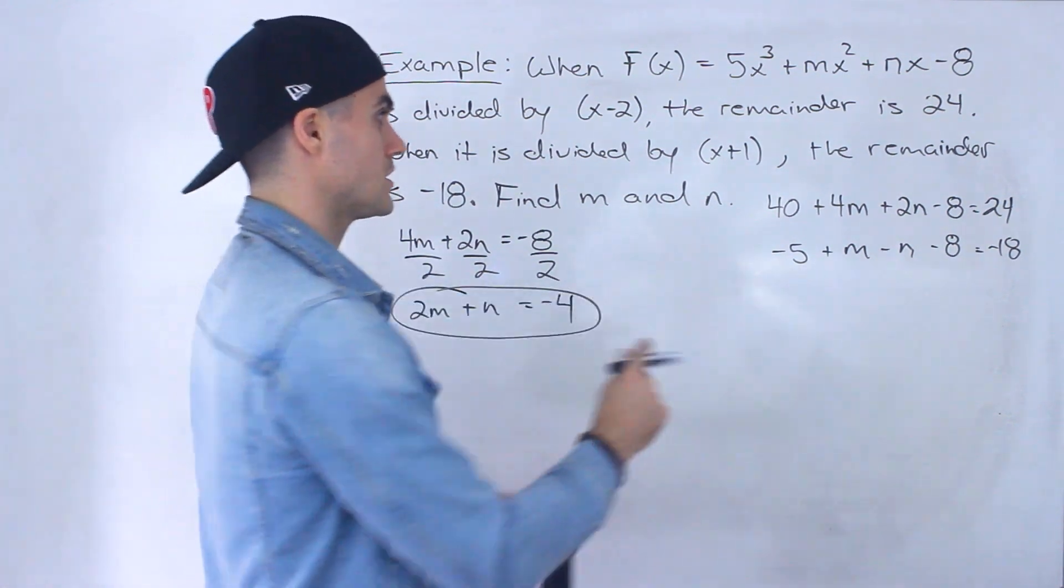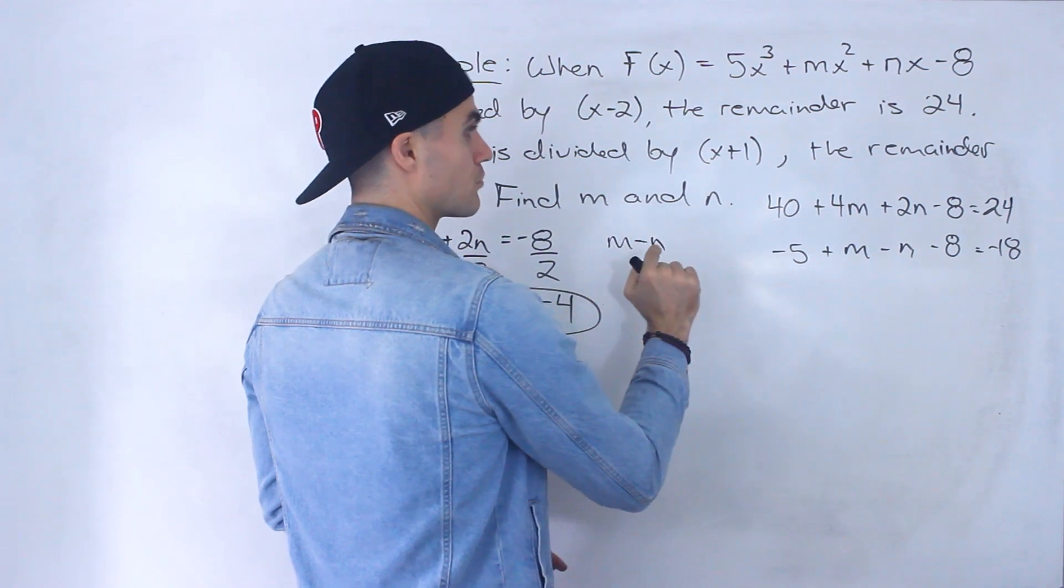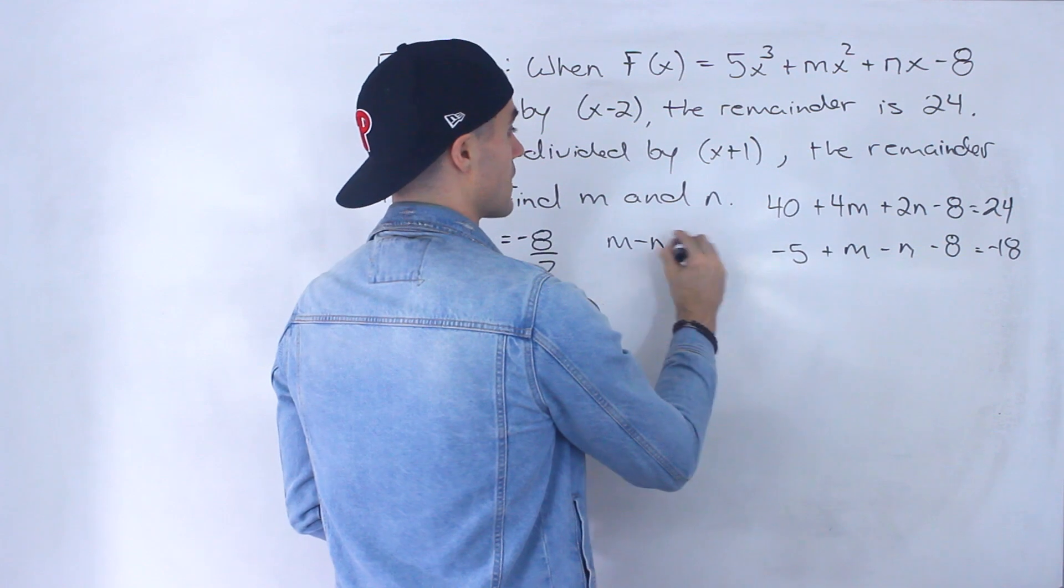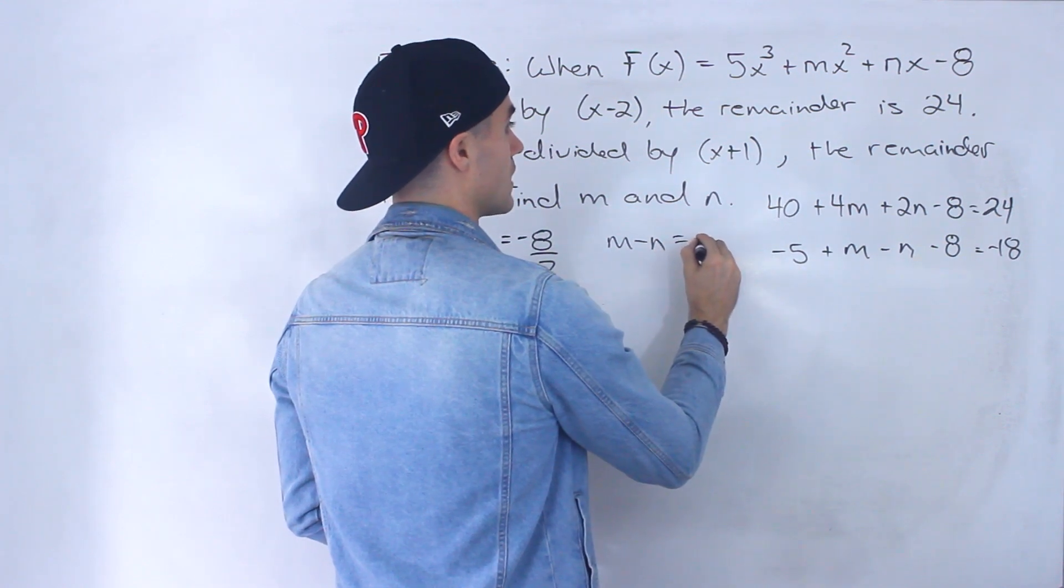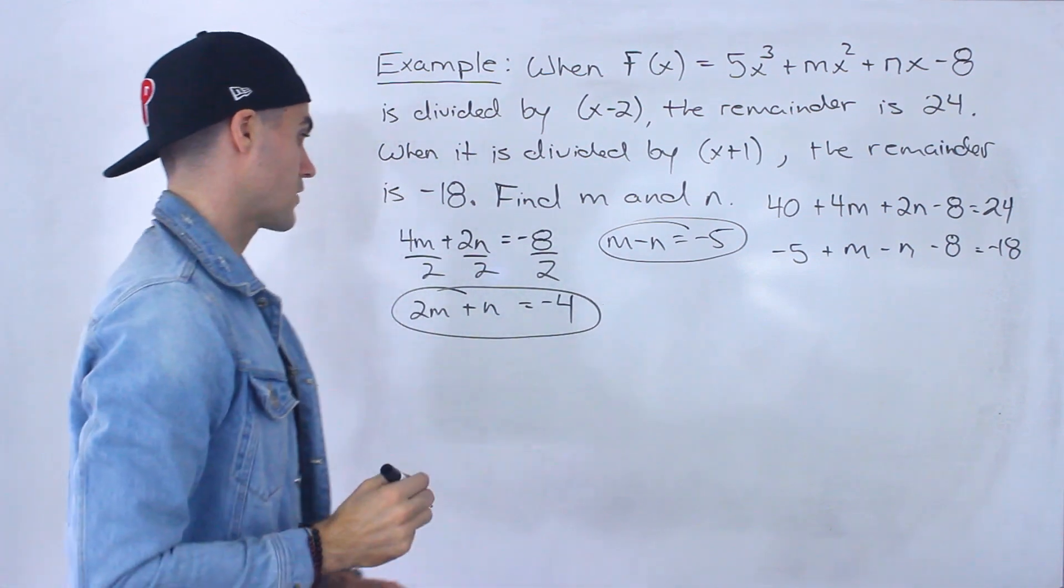Now this second equation, I'm going to keep the m and the n on the left side. Bring the negative 8 over. Negative 18 plus 8 is negative 10 plus 5 gives us negative 5. So that's the other equation.